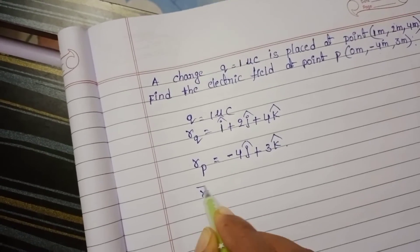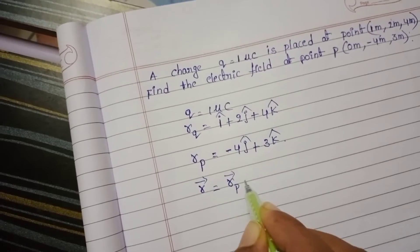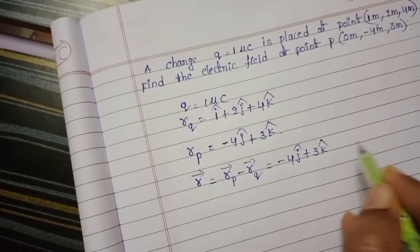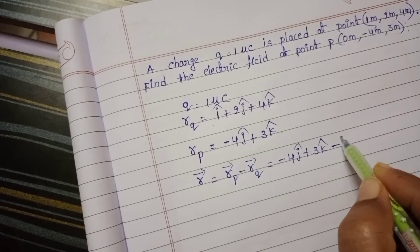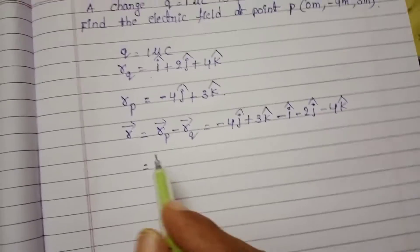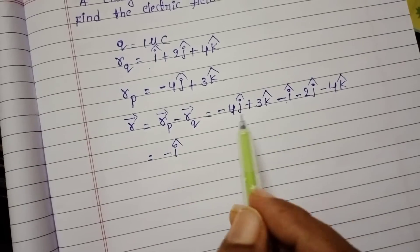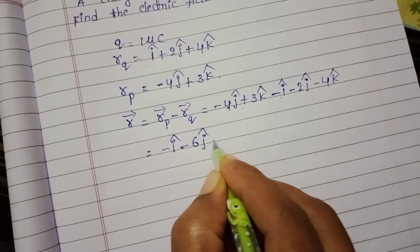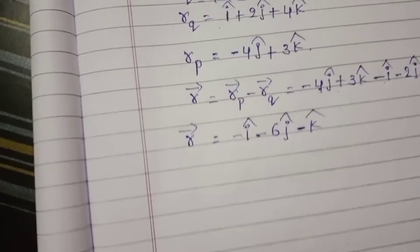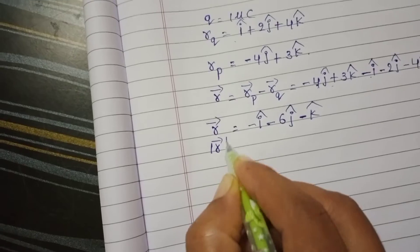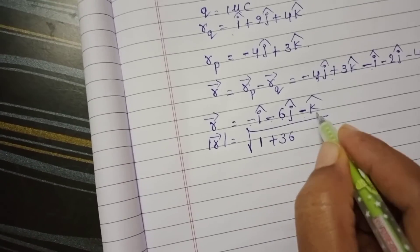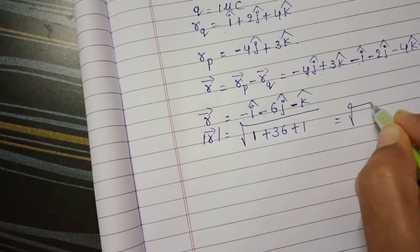The position vector R-bar equals the final position vector minus the initial position vector. So R-bar equals minus 4 J-cap plus 3 K-cap minus I-cap minus 2 J-cap minus 4 K-cap, which gives minus I-cap minus 6 J-cap minus K-cap. The magnitude of R-bar equals the square root of minus 1 squared plus minus 6 squared plus minus 1 squared, which equals the square root of 38.